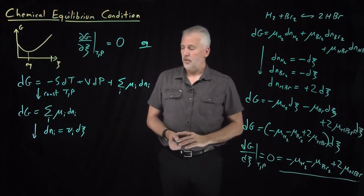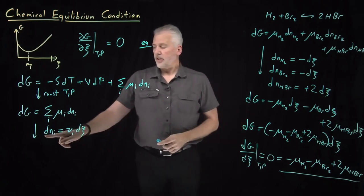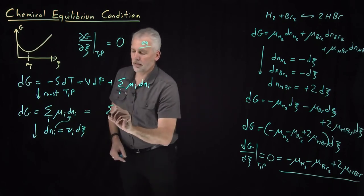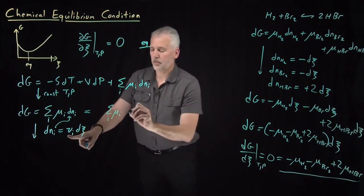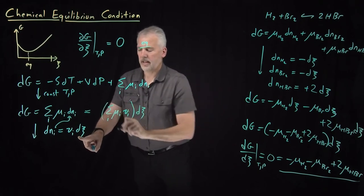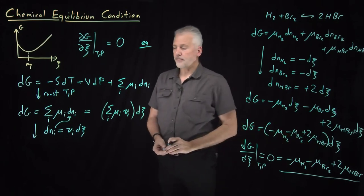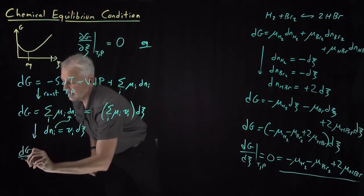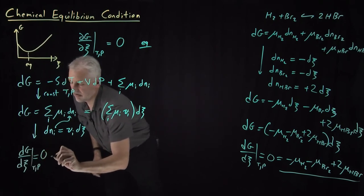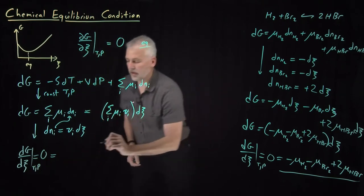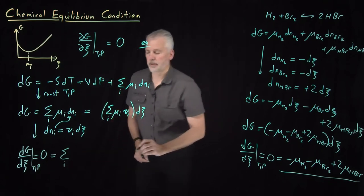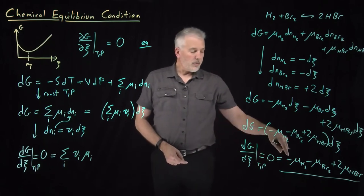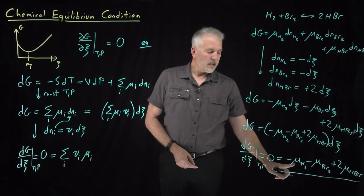Switching back to the general case — hopefully it feels less abstract with this example in mind. Inserting dN = ν·dξ into dG = Σ μ·dN, I can pull out dξ just as before and take the derivative dG/dξ. That derivative equals zero when the quantity in parentheses is zero: Σ ν·μ = 0, where ν are the stoichiometric coefficients. This matches our specific case: stoichiometric coefficients of -1, -1, and +2 multiplying the chemical potentials of each component.